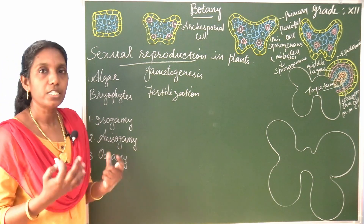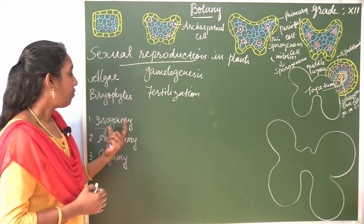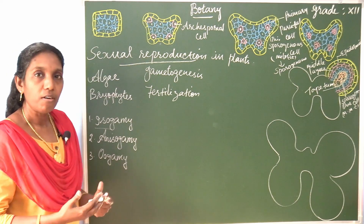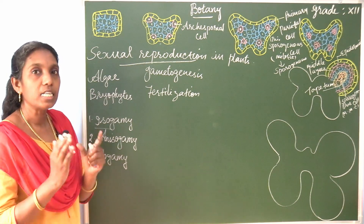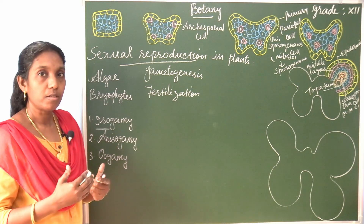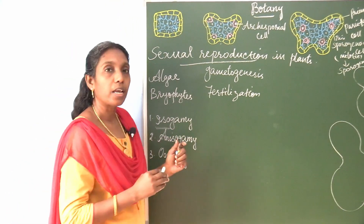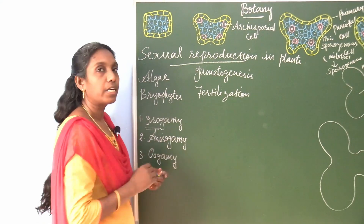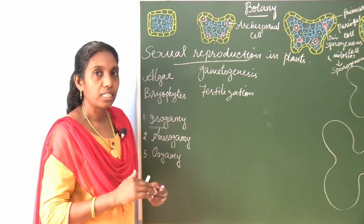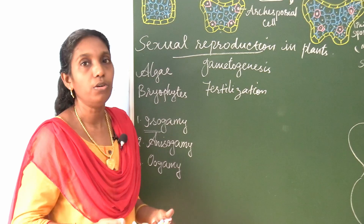What is isogamy? The meaning of 'iso' is same or similar. In isogametic fusion, the gametes are morphologically and physiologically similar gametes. As the name indicates, iso means similar gametic fusion. Then anisogamy — in anisogamy, the gametes are either morphologically or physiologically dissimilar. Dissimilar gametes, either morphologically or physiologically, is called anisogamy.